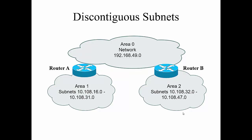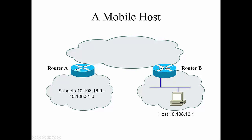What about networks that aren't contiguous? Here is 10.108.16.0 through 31, and here is a completely different network. How do we go from this network to the other network? Our routers have to have a routing table, and they have to know the routes or pathways to the other addresses. That's how the router will learn the addresses and forward the route based on the appropriate decision through the network. Mobile hosts work the same way — it goes through the internet.